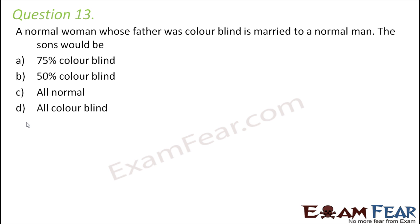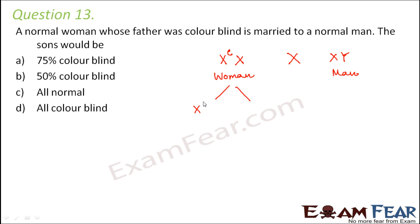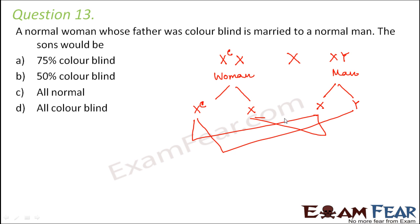Question number 13. A normal woman whose father was color blind is married to a normal man. Again, since the father was color blind, the woman will be a carrier — she will have the color blind gene on one X chromosome, making her genotype X^C X. The man is normal, so his genotype is XY. The gametes produced would be X^C and X from the woman, and X and Y from the man, giving children: X^C X, XY, X^C Y, and XX.